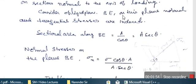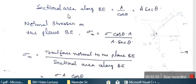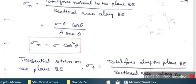We will consider a small element here. For a member — this is ABE — let us take the tensile stress equal to load by area, that is tensile force by area. The sectional area along BE is equal to A divided by cos theta, that is A sec theta. So the normal stress on the oblique plane BE equals the tensile force component divided by the area of plane BE, which gives sigma cos theta times A divided by A sec theta.